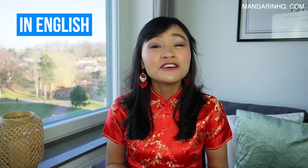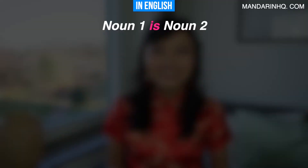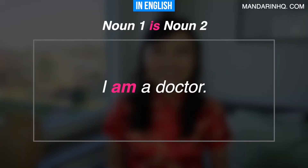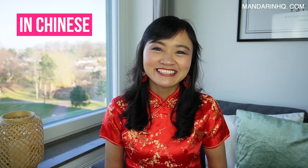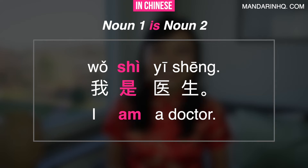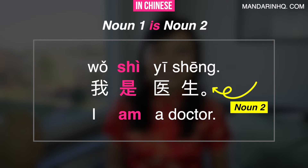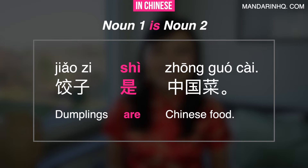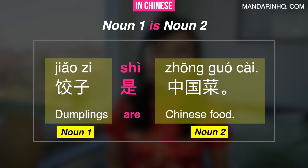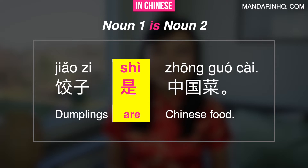In English, you use the verb 'be' to connect two nouns — noun one is noun two. For example, 'I'm a doctor' or 'Dumplings are Chinese food.' This works the same way in Chinese. 我 is a noun and 医生 is also a noun, so we use shì to connect them: 我是医生. Similarly, 饺子 and 中国菜 are both nouns, so: 饺子是中国菜.